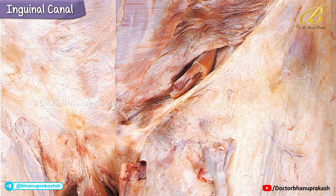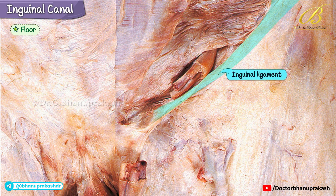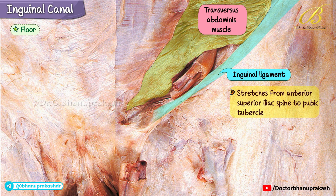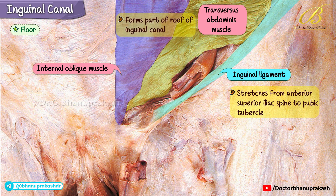Let's go even deeper into the anatomy of the inguinal canal. The floor of the inguinal canal is formed by the inguinal ligament, which stretches from the anterior superior iliac spine to the pubic tubercle — a strong band at the base of the canal providing support. Dissecting further, we find the transversus abdominis muscle along with the internal oblique, which forms part of the roof of the inguinal canal, giving it structural strength from above.